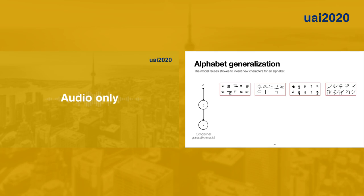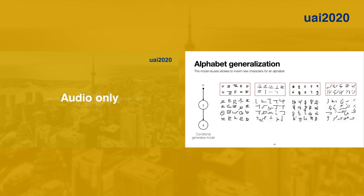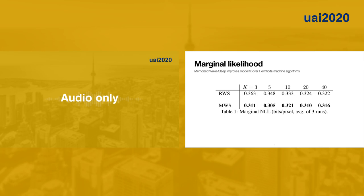Given characters from different alphabets, we show samples of novel characters of that alphabet. By building characters from a small number of stroke types, our model encourages the same strokes to be reused within an alphabet, like the diagonal lines in the rightmost alphabet. We compared memoized wake sleep with re-weighted wake sleep and also with VIMCO, which is based on the importance-weighted autoencoder objective but includes a control variate term to reduce gradient estimator variance. Memoized wake sleep outperforms both methods in terms of negative marginal likelihood.